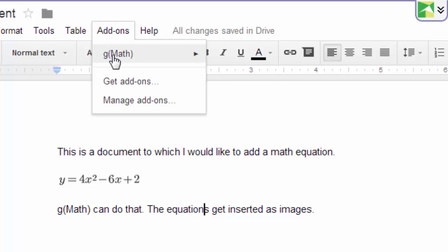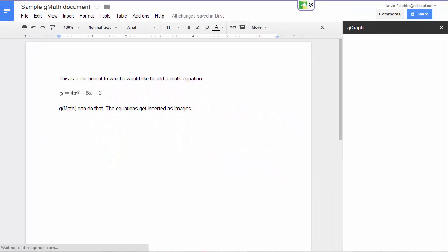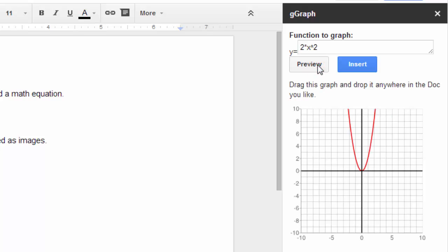So you go to add-ons, the GMath add-on, and create a graph. This time, the sidebar on the right side asks you for a function and gives you a sample one to start with: 2x squared. I'm going to preview that function.